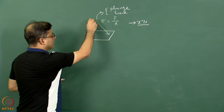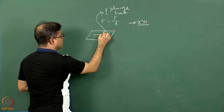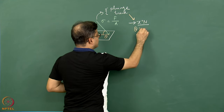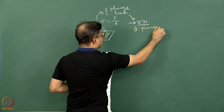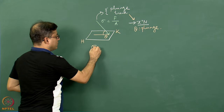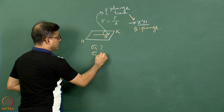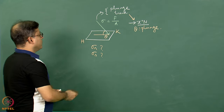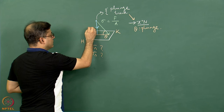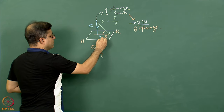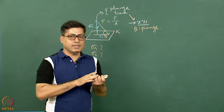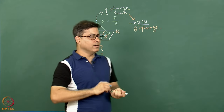Imagine this line of action of stress has theta as the plunge. So I write this as the trend and theta is the plunge. The question is: on this plane, how much is the normal stress acting and how much is the shear stress acting? To do this we drop a normal from here and resolve sigma as sigma_n and sigma_s. Shear stress is the one which acts along the plane and normal stress is the one which acts perpendicular to the plane.